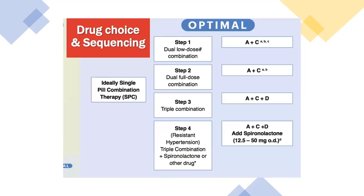The ISH 2020 guideline recommends starting with a low-dose combination single-pill therapy — ACE inhibitor or ARB with a calcium channel blocker. In step two, double the dose to full-dose combination. In step three, add a thiazide diuretic — the same as NICE step three. In step four, add spironolactone or an alpha-blocker to the triple combination.